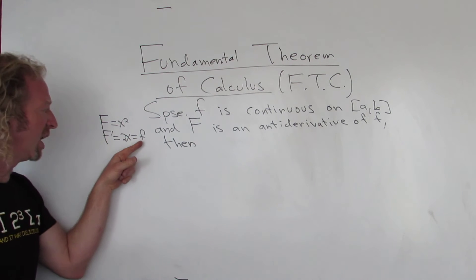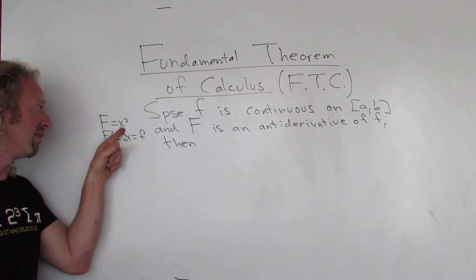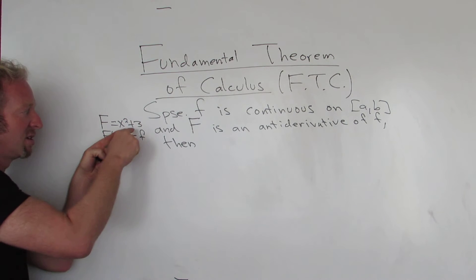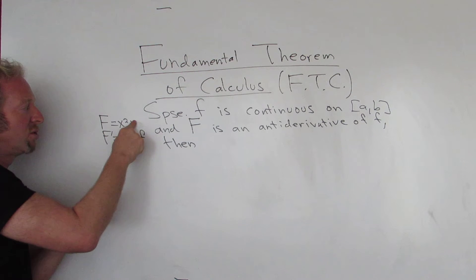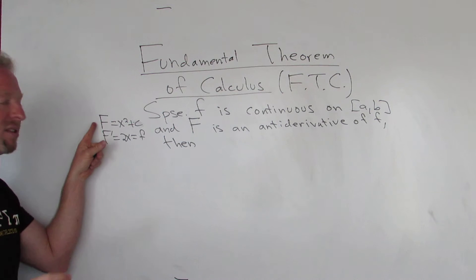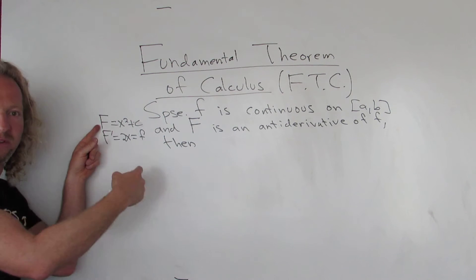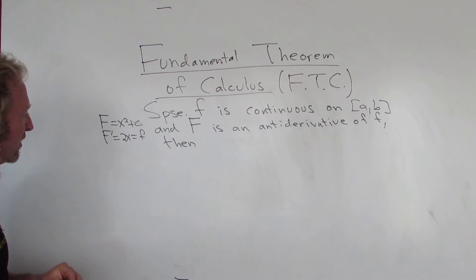In other words, if you integrate little f, you get big F. Now, you could add a number here and nothing would change, right? Because the derivative of a number is zero. You could add c here, then big F would be the general antiderivative. That's what it's called, the general antiderivative.